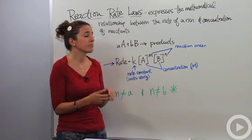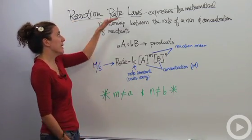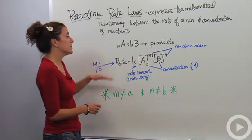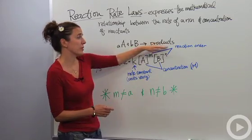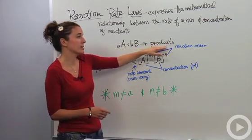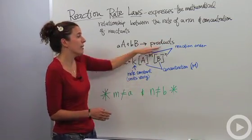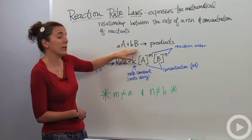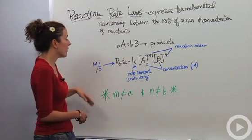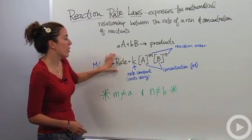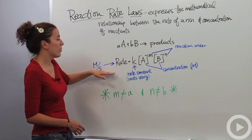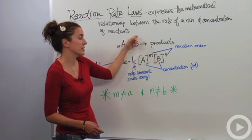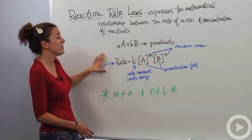Taking those two things into account, we're going to make mathematical rate laws. Rate laws are actually unique for each particular reaction. So let's take the reaction A plus B yields products. Notice I don't even write the products out — they do not affect how fast or slow the reaction is. The reactants are the important ones. So our rate law expression is: rate equals K times the concentration of A times the concentration of B raised to a certain power.